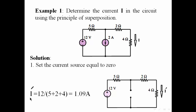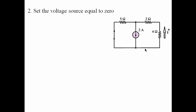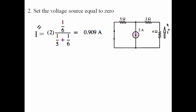Since this current is related to the voltage source only, we added this symbol to distinguish this current from the current that results from the current source in the next step. In this step, we set the voltage source equal to 0 by replacing it with a short circuit. And now we just need to find the current I that results from only the current source using the current divider rule, as we can see here.